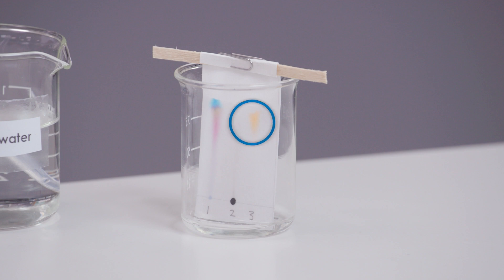Sample three shows that the orange ink is pure. We know this because it only has one spot of colour on the chromatogram.